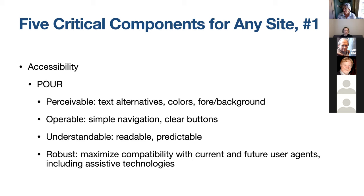Understandable means users can read and understand the content and the user interface. Check this by having friends watch themselves navigate your site. Finally, robust means the site maximizes compatibility with current and future assistive technologies — things like screen readers — both now and in the future.